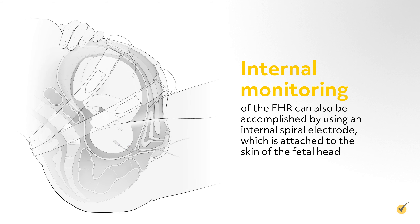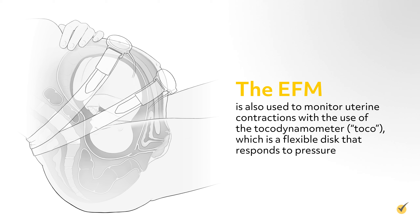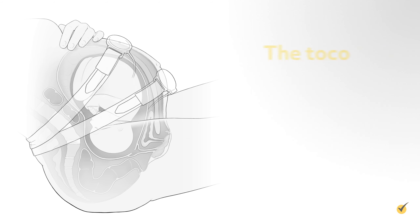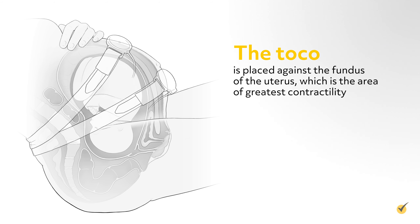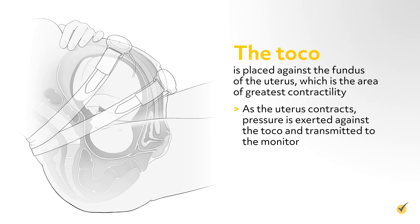Electronic fetal monitoring, or EFM, is frequently used to provide a visual assessment of the fetal heart rate, which is especially beneficial during labor. Electronic monitoring has major advantages over auscultation with a fetoscope, because fetal distress can be detected by observing the continuous fetal heart rate and the periodic changes that occur during and after uterine contractions. Therefore, interventions can be timely and more effective.